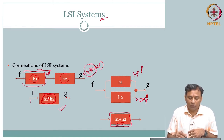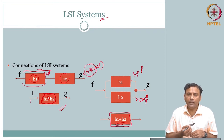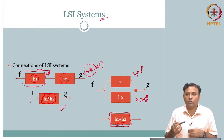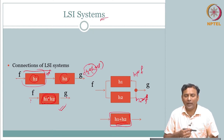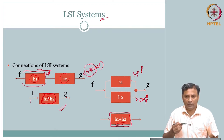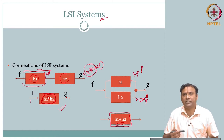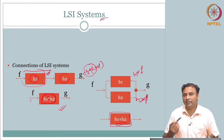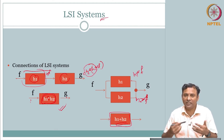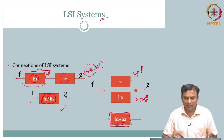Now that we have seen how convolution connects the system function with input and output, let us see how we can make use of the Fourier transform — the other equivalent domain — to analyze a system. This is going to be a very quick review. The Fourier transform is going to be a direct extension from 1D to 2D. There are a couple of aspects that may initially look complicated, but once you understand how to read the equation intuitively, it is not that complicated.